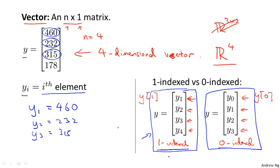Finally, by convention, usually when writing matrices and vectors, most people will use uppercase to refer to matrices. So when we use capital letters like A, B, C, X to refer to matrices.